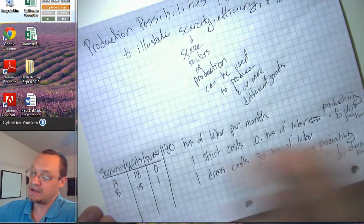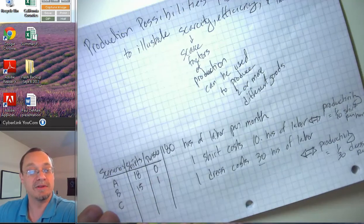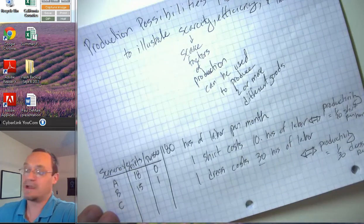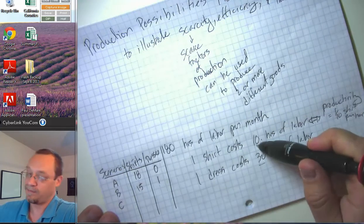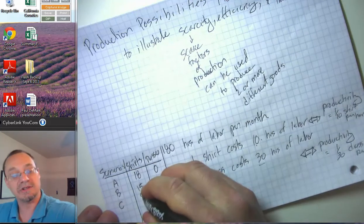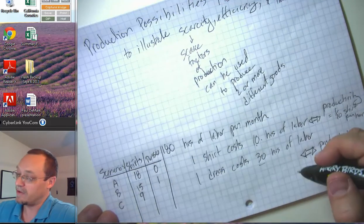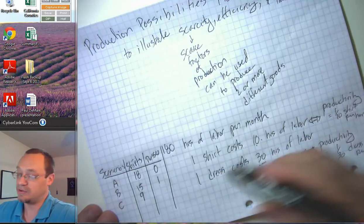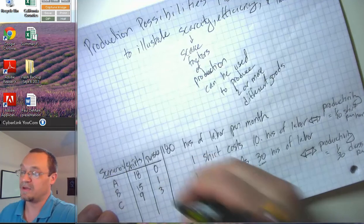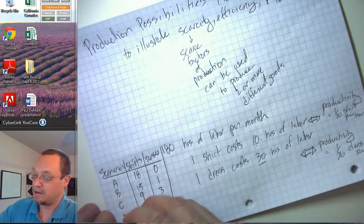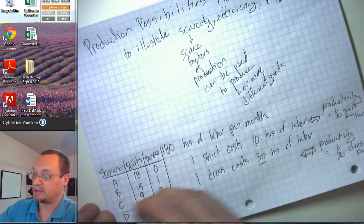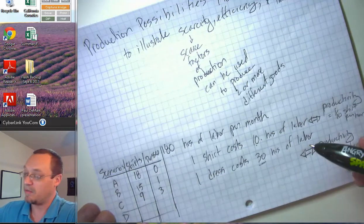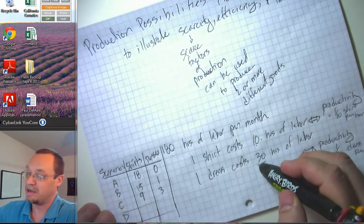What if we split our time equally between the two goods? 180 divided by 2 gives 90 hours devoted to shirt production, so we get 9 shirts. And 90 hours devoted to dress production at 30 hours per dress gives us 3 dresses. That's scenario C. And if we entirely specialized in producing dresses, we'd have 180 divided by 30 — six dresses — and zero shirts. That's scenario E.